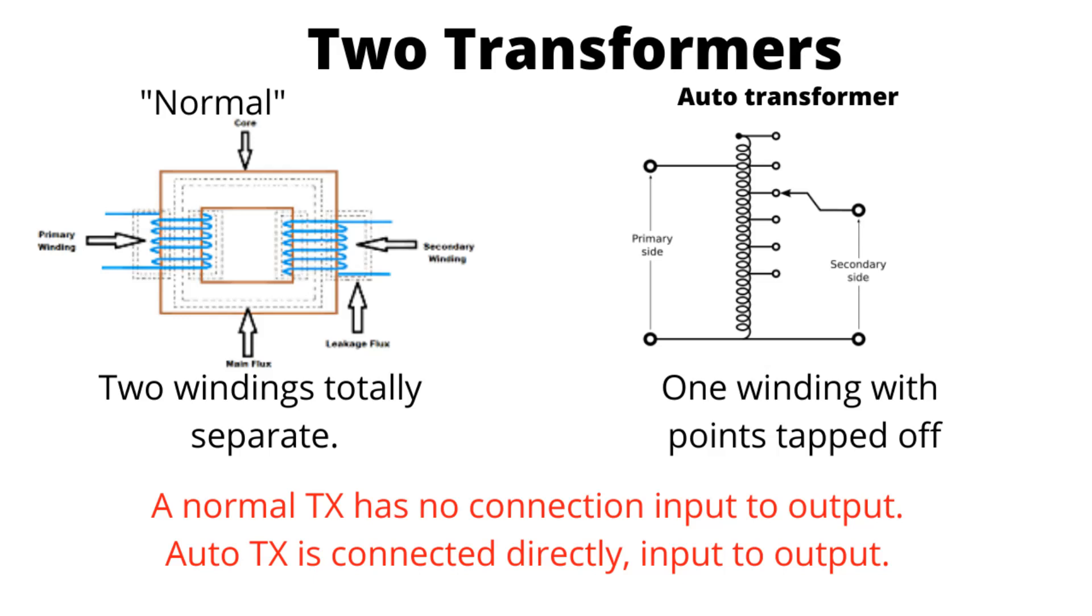Now when you look at the auto transformer, you can see that actually you've got one wire that comes up and goes all the way through that coil and all the way up to the top. You've got tappings off that single wire. It still works on the voltage per turns, but because the whole thing is across the mains.